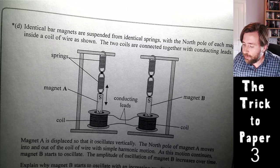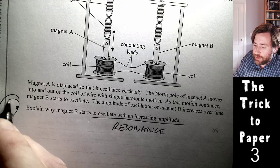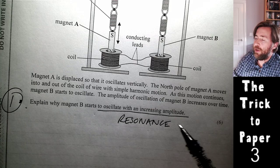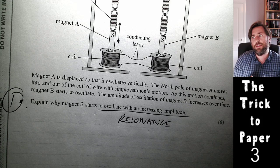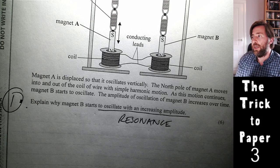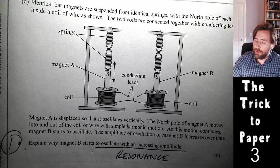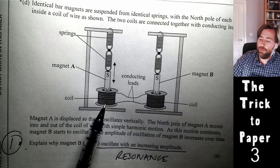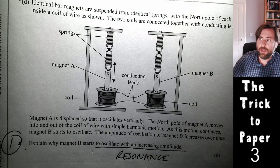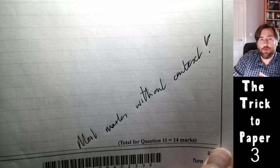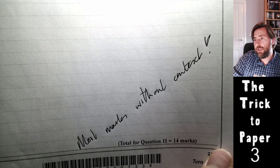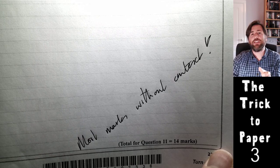'Explain why magnet B starts to oscillate with increasing amplitude.' First reading: what do I have to do? Increasing amplitude means resonance. I can immediately write a three-part resonance explanation: driving frequency equals natural frequency, therefore maximum energy transfer, therefore rapidly increasing amplitude — that's three marks. Then read back for context: the EMF induction and motor effect create the driving force. But you could get most marks without even engaging with the context.